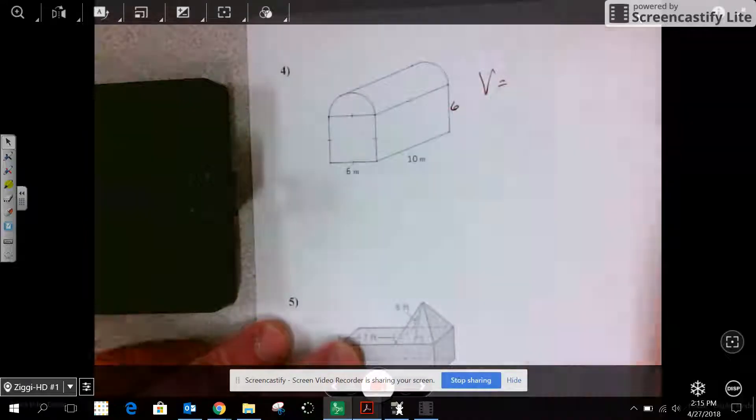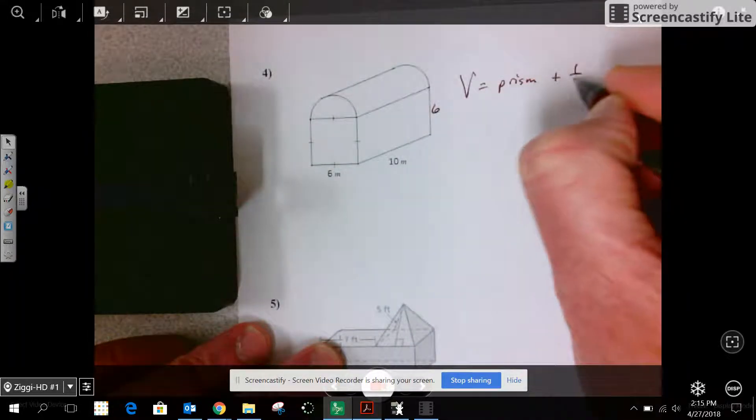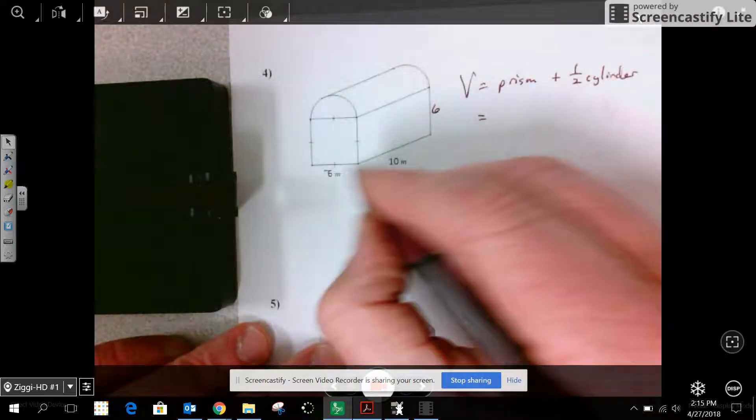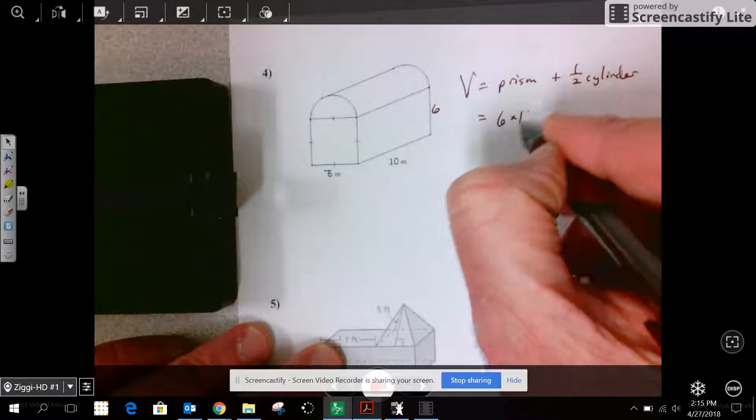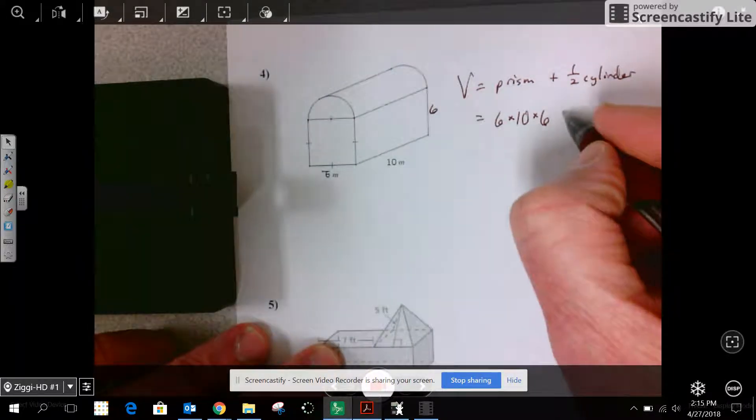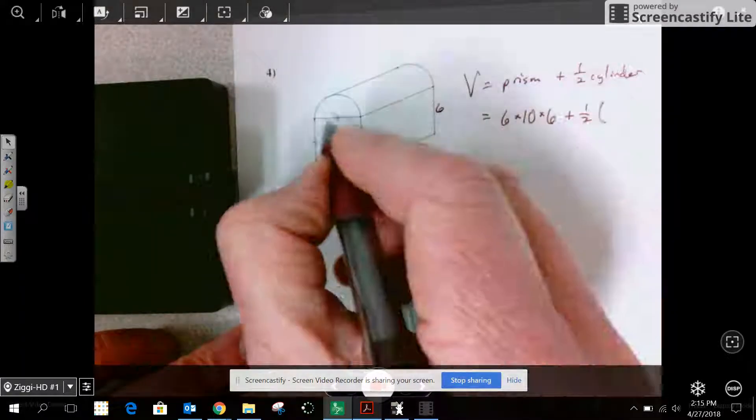So I have two volumes here. I have the volume of the prism plus half of a cylinder. So 6 times 10 times 6 for the prism plus half pi r squared h. So I need to find r.